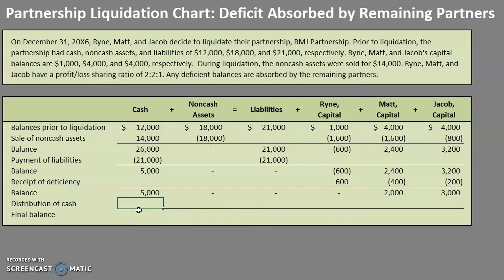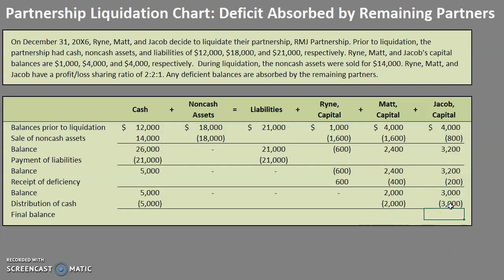Last but not least, we have to distribute the cash. Once we get to the point of distributing cash, we distribute it according to capital balances. Matt has $2,000 and Jacob has $3,000, so Matt gets $2,000 and Jacob gets $3,000. We take the $5,000 cash out of the partnership — $2,000 to Matt brings his capital to zero, and $3,000 to Jacob brings him to zero as well. Our final balances are zero across the board, which is always the goal in a liquidation.